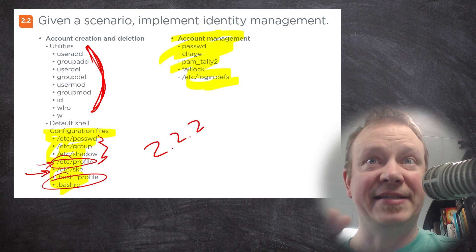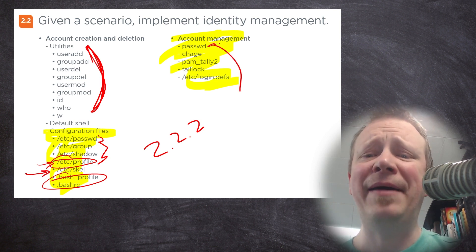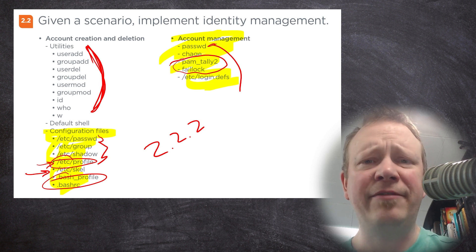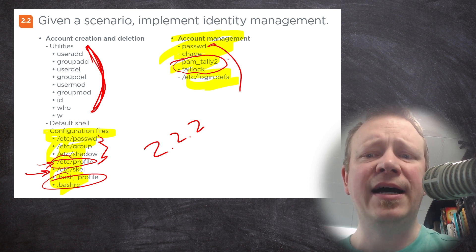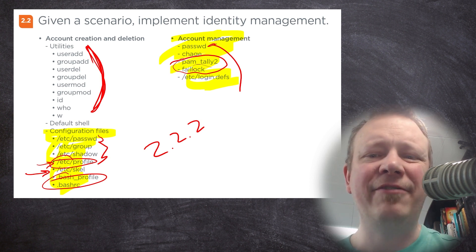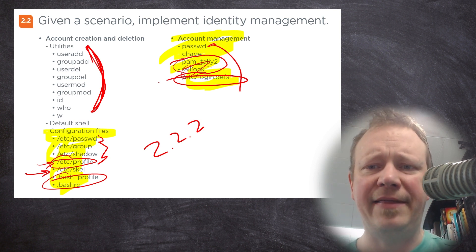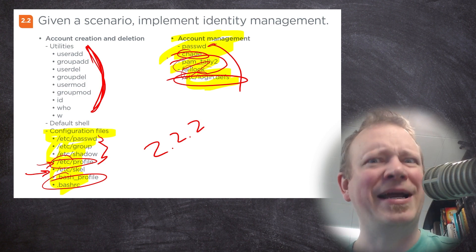I'll talk about bash_profile, bashrc, and etc/profile when we get to the command line. Also, don't let me forget about the /etc/skel directory — that's important. We're going to look at how to manage passwords, and also tools like pam_tally2 and faillock, which can limit or disable an account if people fail SSH logins too many times. pam_tally2 is outdated; faillock is the new way, though I actually recommend fail2ban.